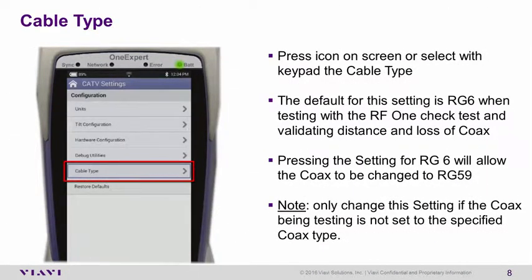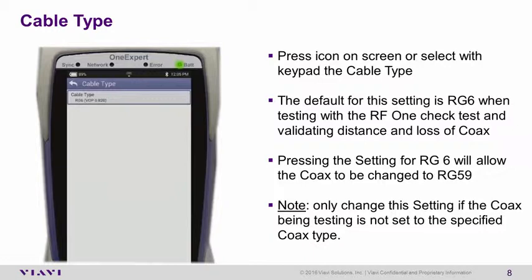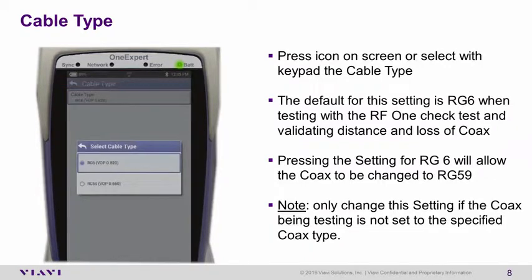The Cable Type parameter, when opened, allows for the selection of the RG6 or RG59 drop cable for testing with the ONE Check TDR test. The default is usually RG6. By tapping on the cable type, you can also select RG59 based on the cable being tested for the ONE Check test.